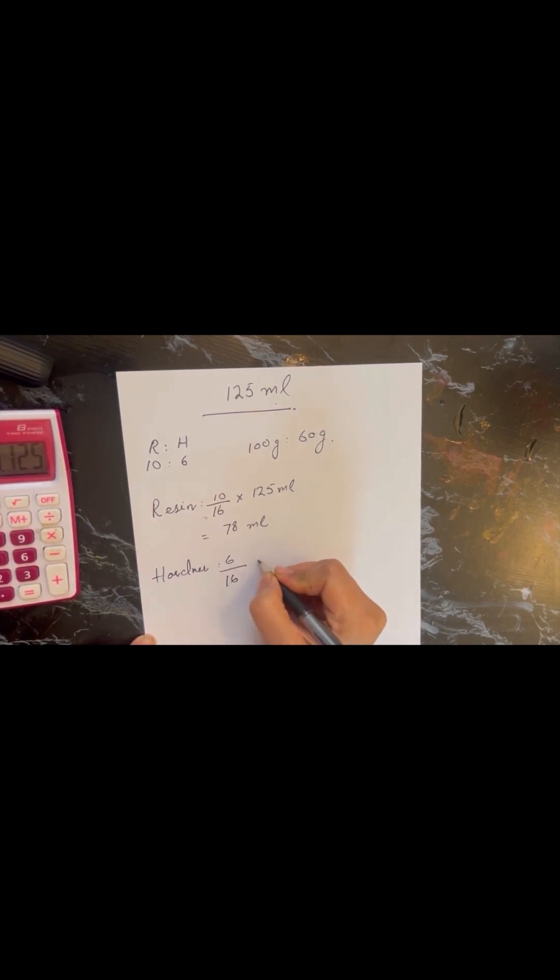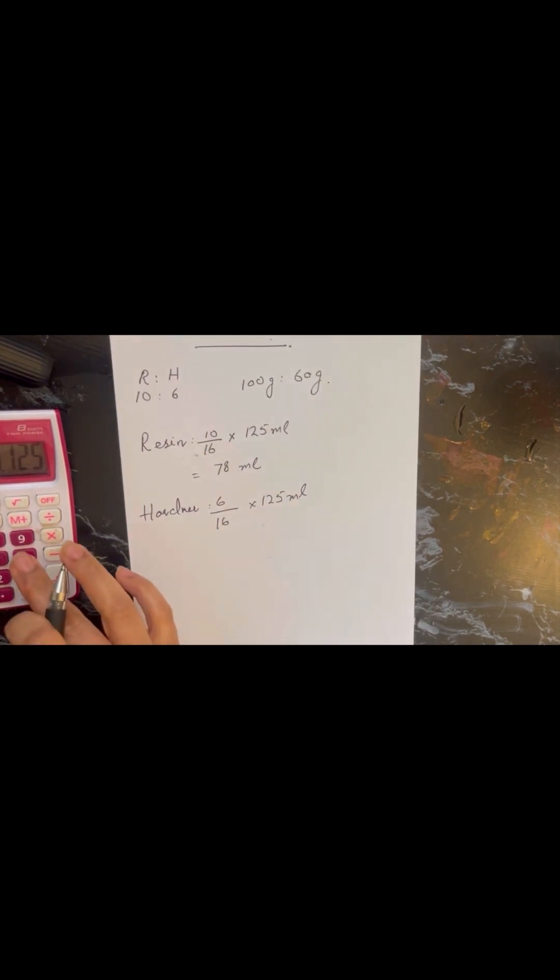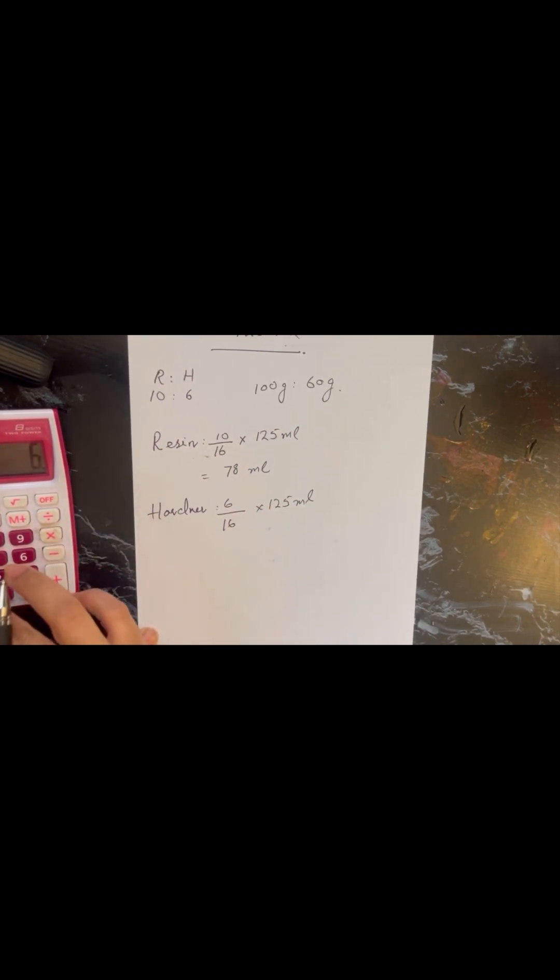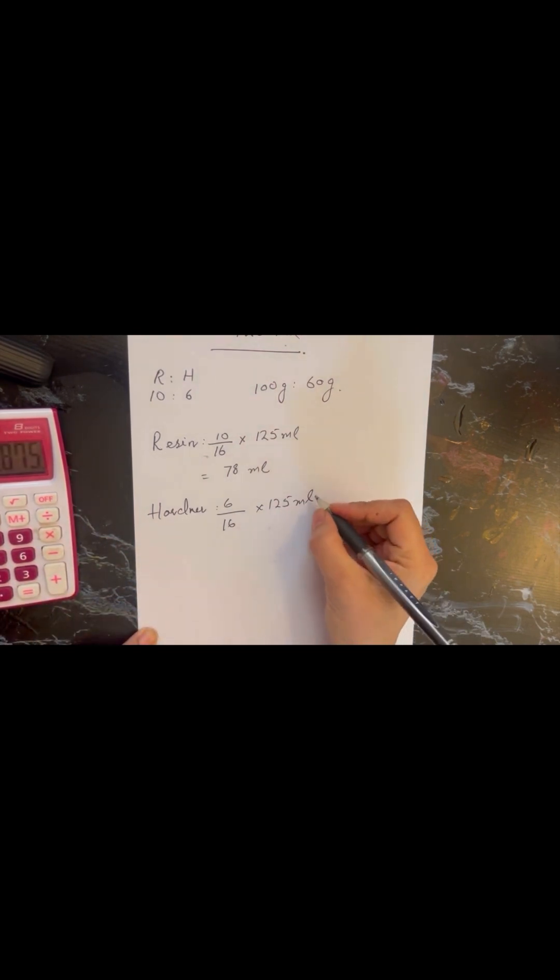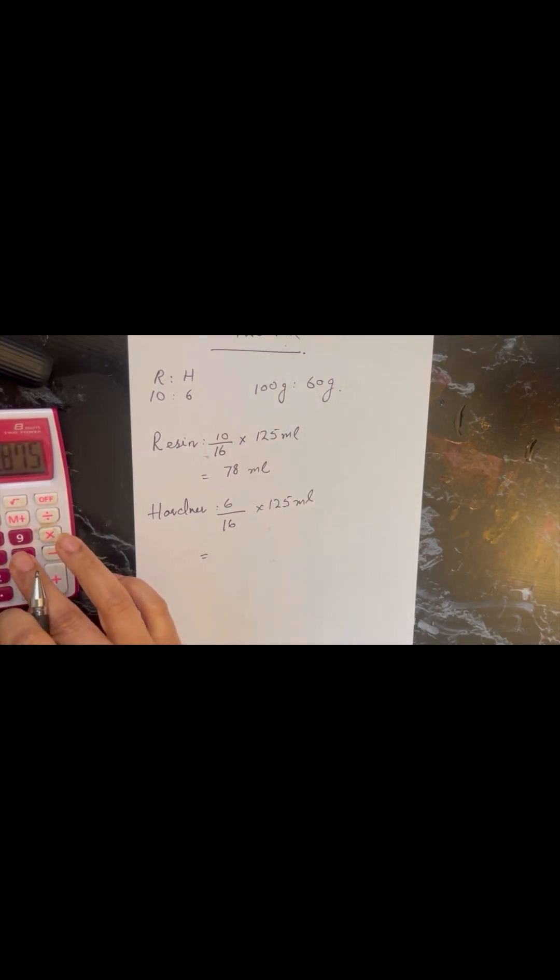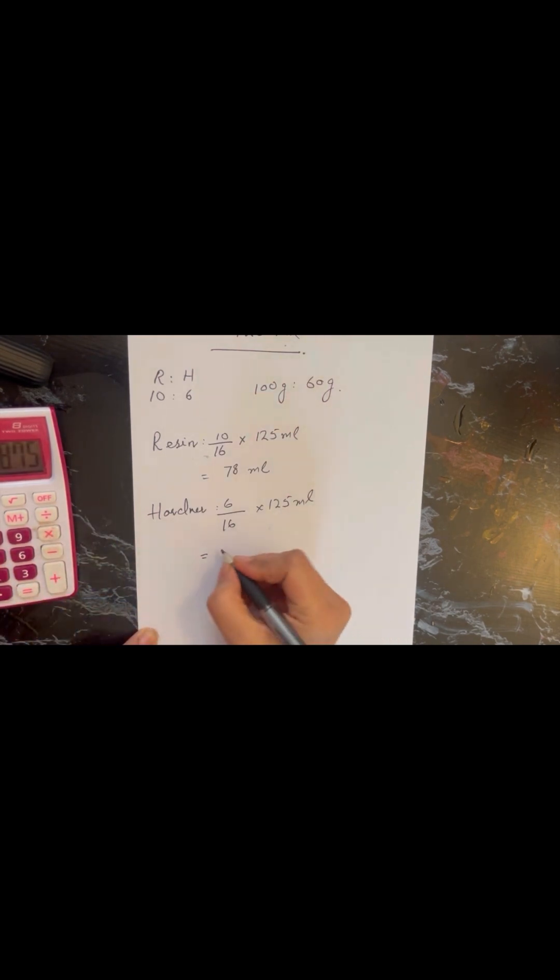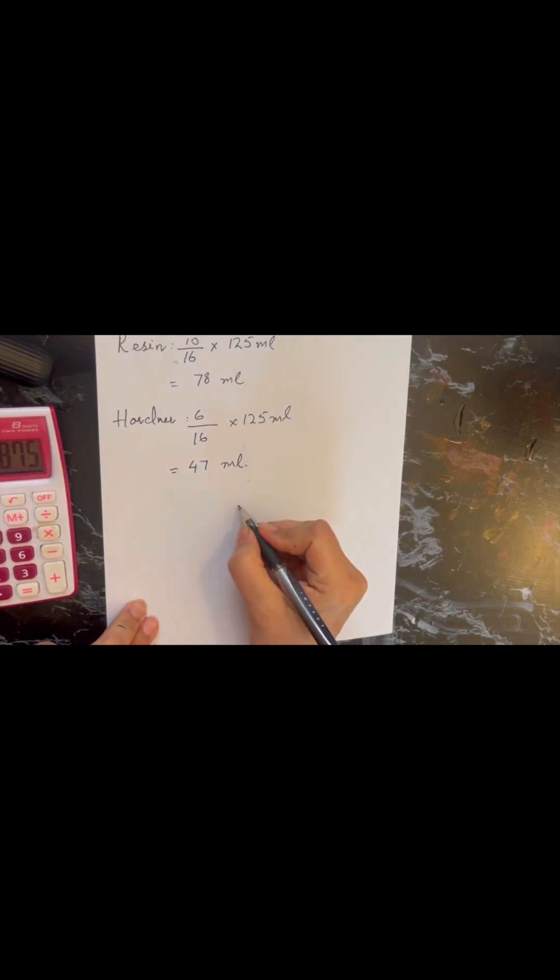So now I will be calculating hardener. It's 6 ratio 10 - 6 is the amount of hardener among the 16 parts, we just have 6 parts of hardener. So for that we will write 6 by 16 times the volume that we want to work with. So after calculating you can see that the answer is 46.87 but I am going to round it up and it will be 47 ml.